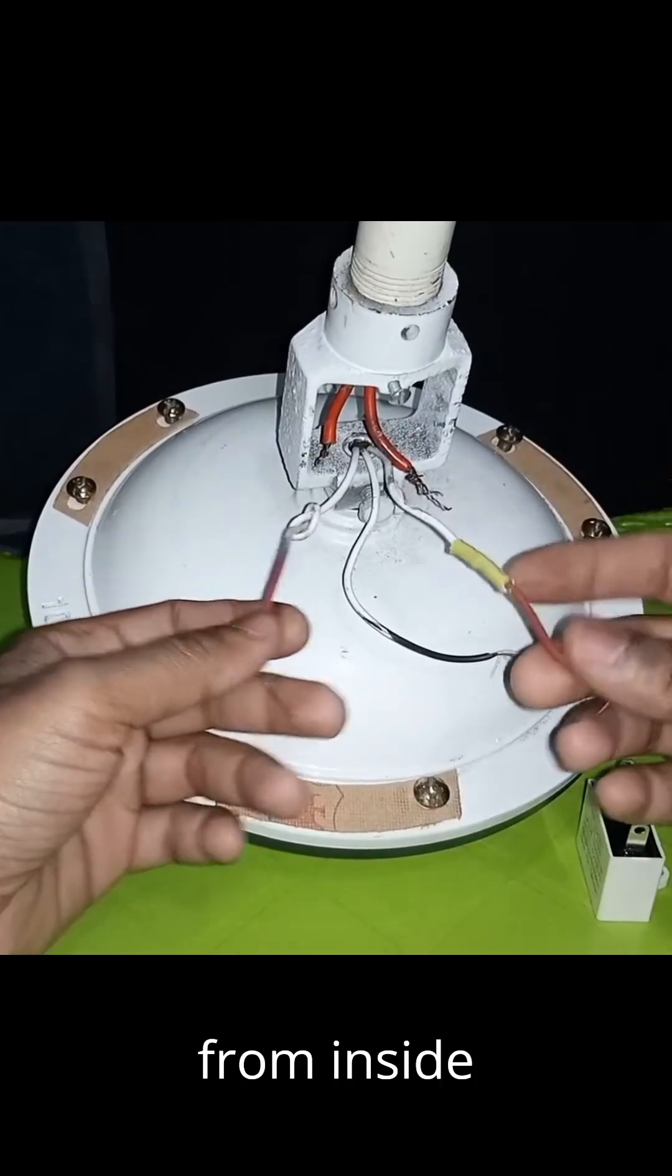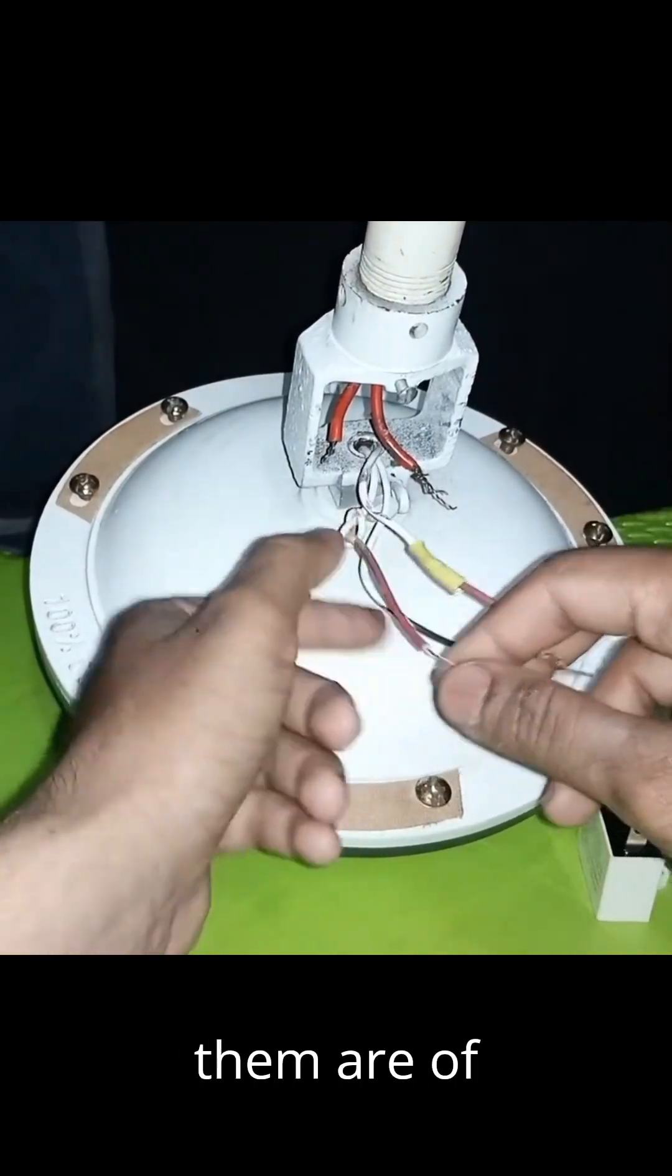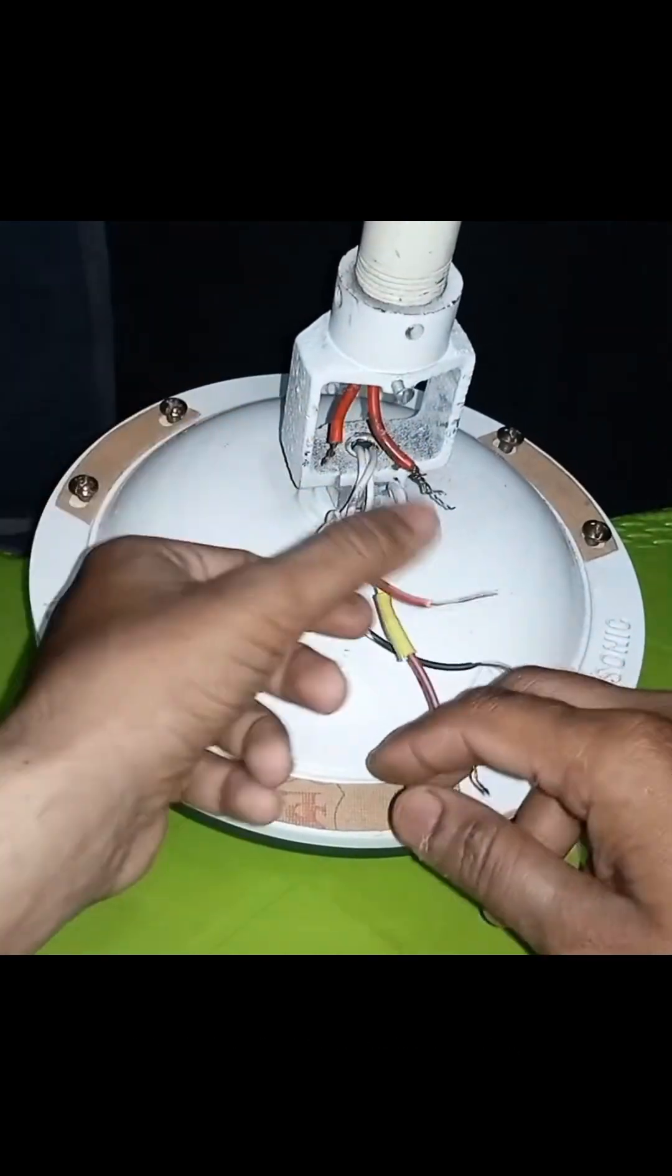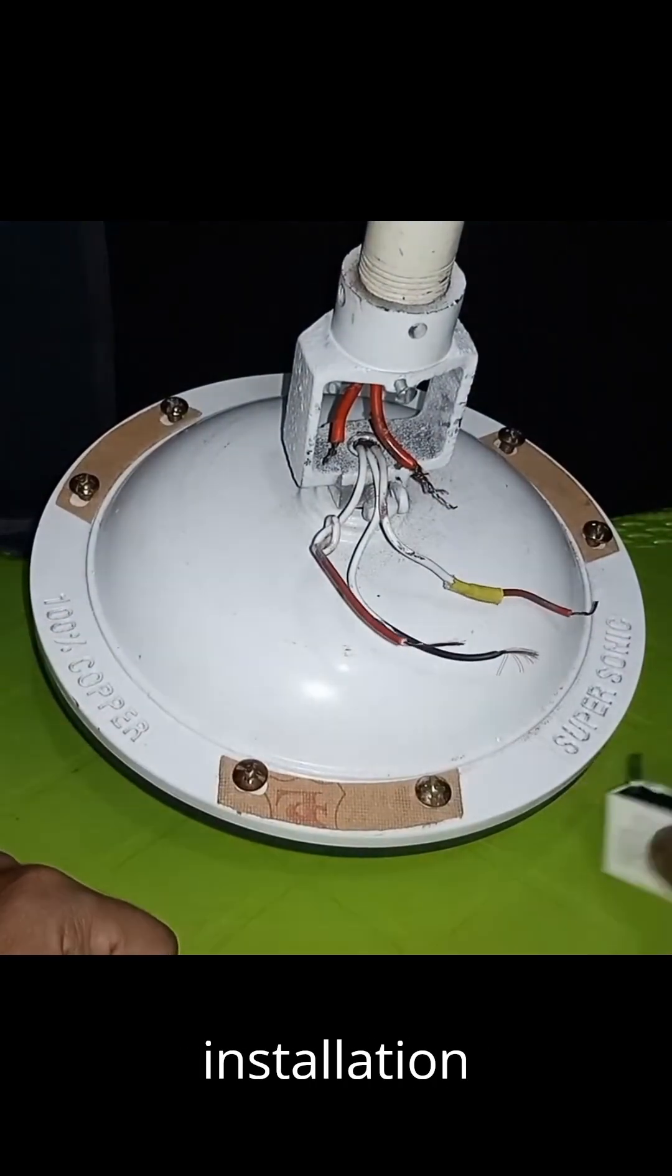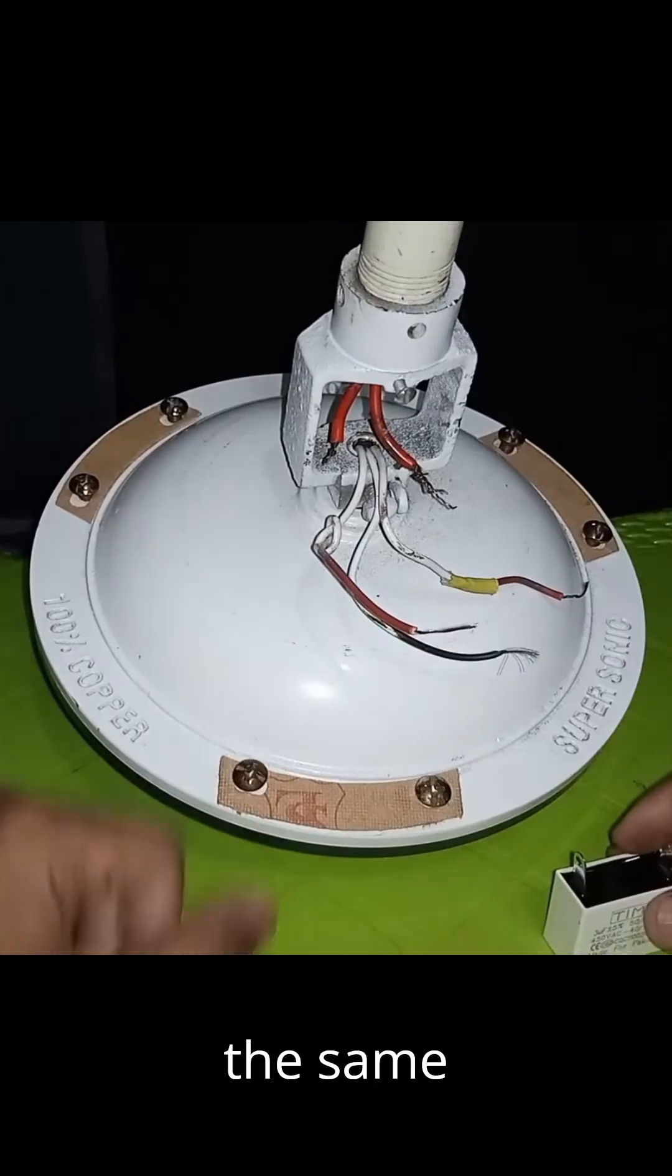Friends, there are three wires inside it which come from inside the fan. Two of them are of the same color and one is different. This ceiling fan's wiring and capacitor installation will be explained. It has three wires, two are the same color, one is different.